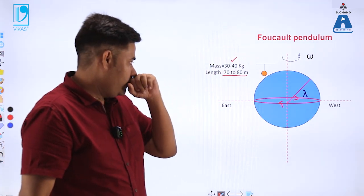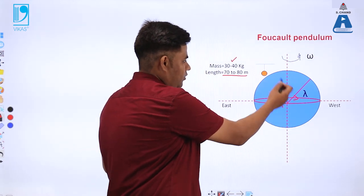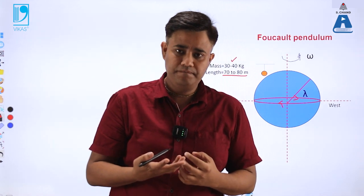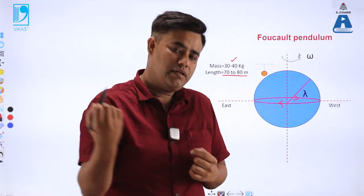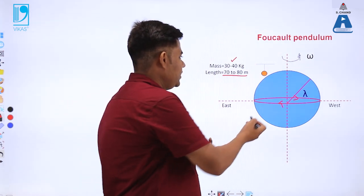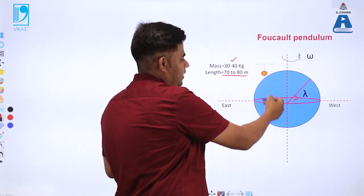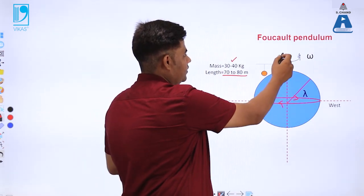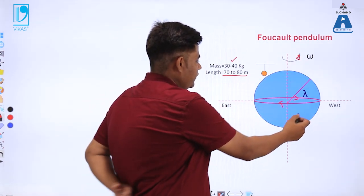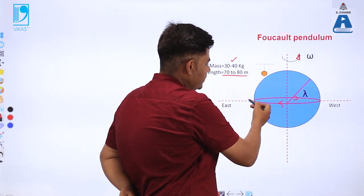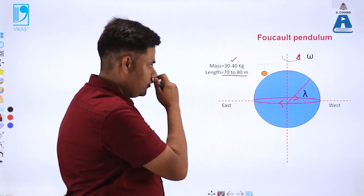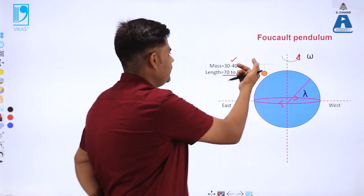What was the need of this pendulum? We know that the Earth is rotating about its axis, but how do we prove that? And also, how do we prove that the Earth is simultaneously revolving around the Sun? To prove this, let us consider the Earth having a particular angular velocity omega, moving from the west to the east.